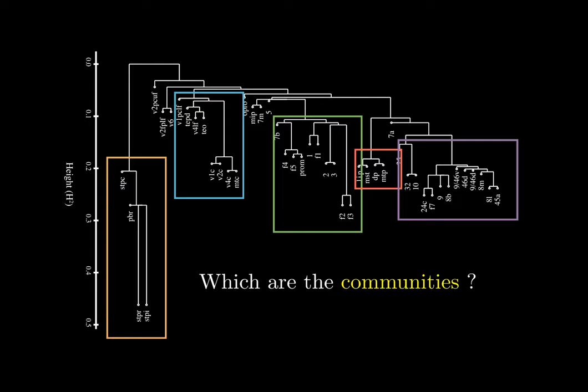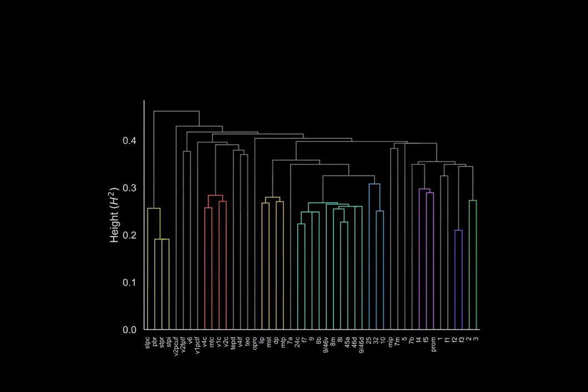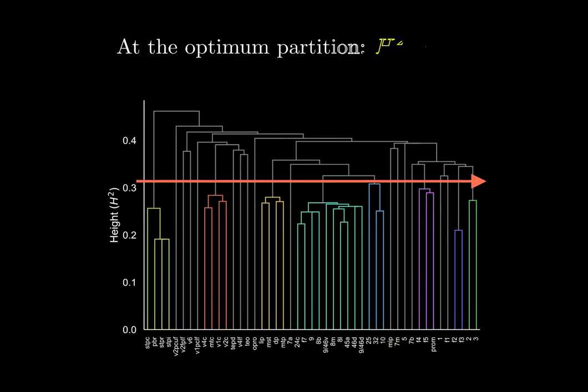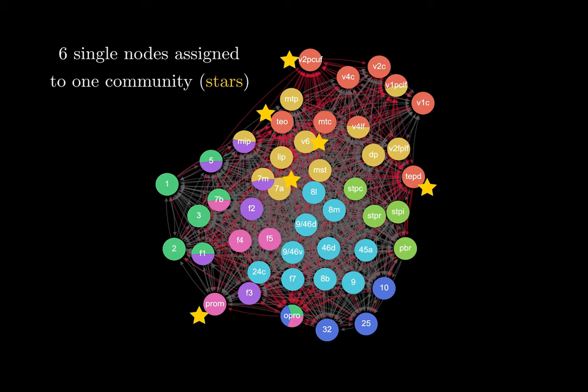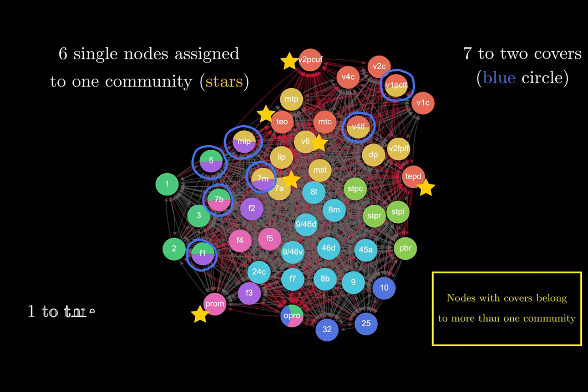Using our link community algorithm, we can represent the node hierarchy as a dendrogram or tree. We find the best node community partition by cutting this tree at the optimal h-square, showing eight node or areal communities. Notice that some areas did not merge to any node community at this hierarchical level. We developed an algorithm that assigns these single areas to one or more node communities from the best partition. Six areas were assigned to one community, seven to two communities, and one to three. These results suggest that there are areas belonging to more than one parallel pathway.